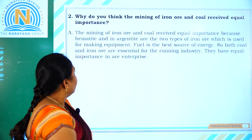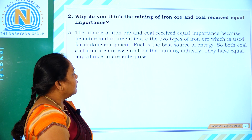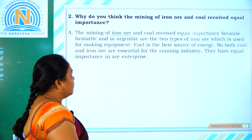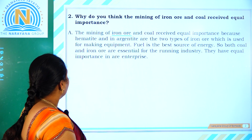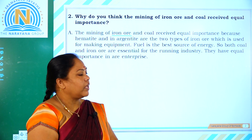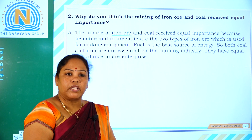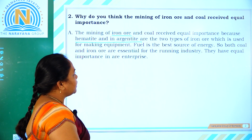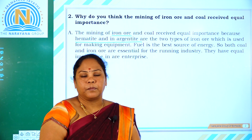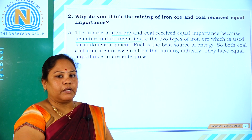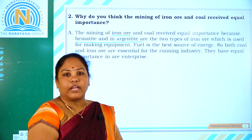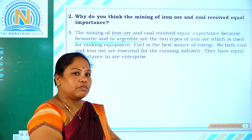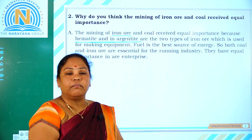Let us move on with question number 2: why do you think the mining of iron ore and coal received equal importance? Iron ore and coal received equal importance because hematite and anagenetite are the two types of iron ore used for making equipment. Whatever equipment is made uses these two types of iron ore.